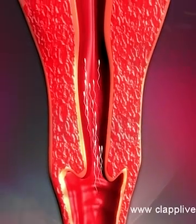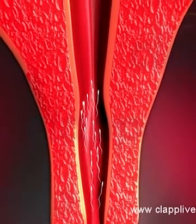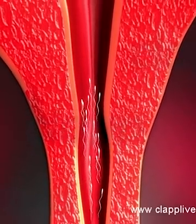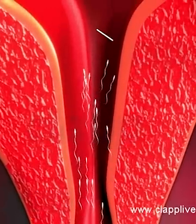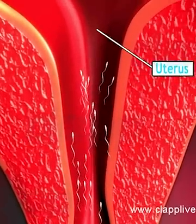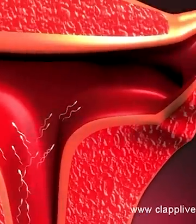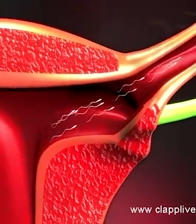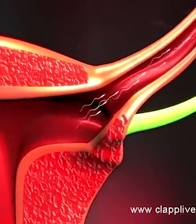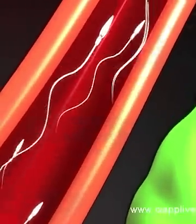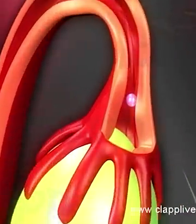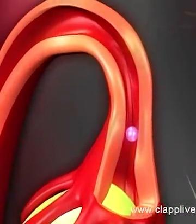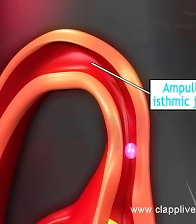Human sperms are motile and rapidly swim towards the ovum lying in the fallopian tube. Sperms travel through the cervix into the uterus and reach the ampullary isthmic junction of the fallopian tube. Within five minutes, about a hundred sperms reach the fallopian tube. The ovum released from the ovary is also transported to the ampullary isthmic junction, where fertilization occurs.